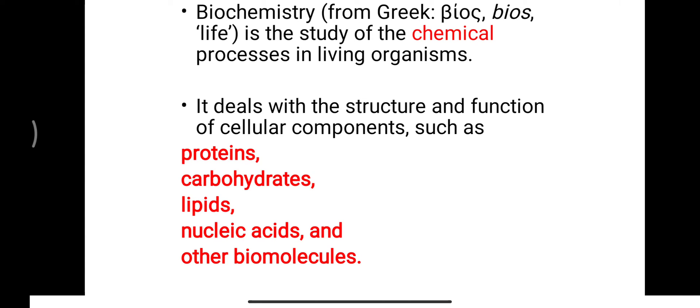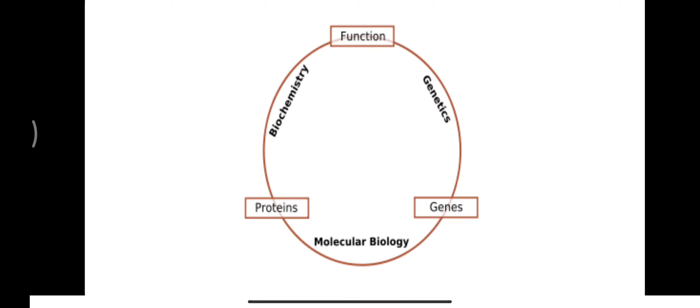Understanding these molecules helps us understand health and disease. For example, if you know about biomolecules like vitamins, you can understand what type of reactions that vitamin helps in, and with the deficiency of that vitamin, which reactions will not occur. That understanding is possible with the help of biochemistry. Biochemistry is also connected with genetics as well as molecular biology.